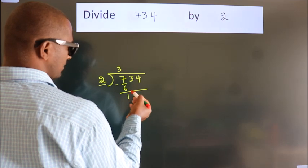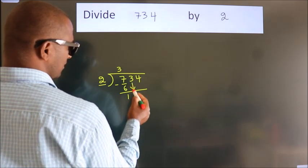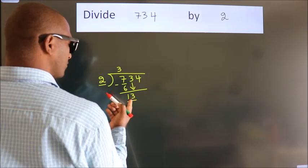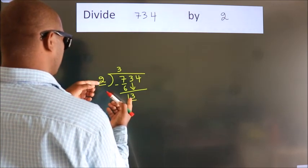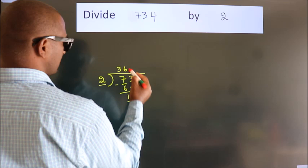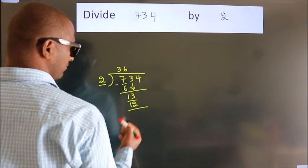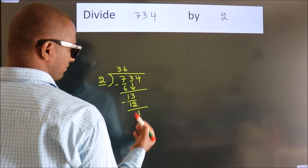After this, bring down the beside number. So, 3 down. So, 13. A number close to 13 in 2 table is 2 times 6 is 12. Now, we subtract, we get 1.